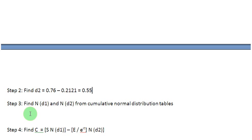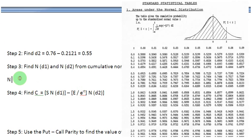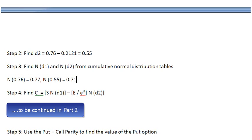In step 3, we go to the cumulative normal distribution tables, available in any standard financial or statistics textbook, and find the N values for D1 and D2. For D1 of 0.76, the table gives N(D1) = 0.7734, approximately 0.77. For D2 of 0.55, the table gives N(D2) = 0.71. We now have all the inputs ready to compute the value of the call option using the Black-Scholes formula.